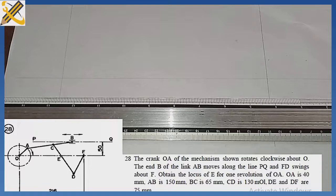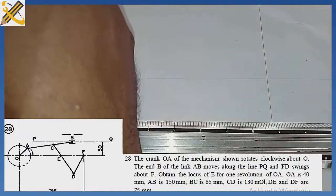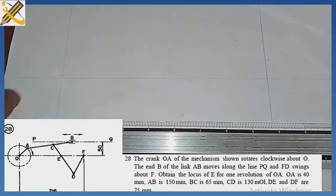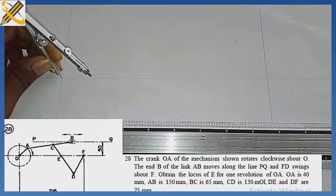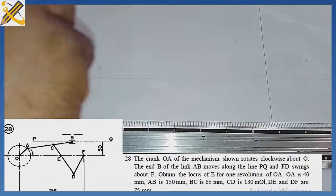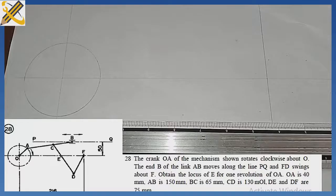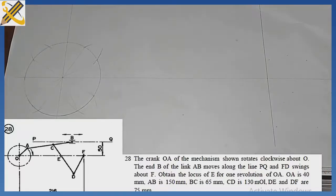We are told that the dimension for OA is 40. With your compass, measure radius 40, then prepare a perpendicular line, place it at the center, and draw. By the time you draw that circle, divide it into 12 equal halves.